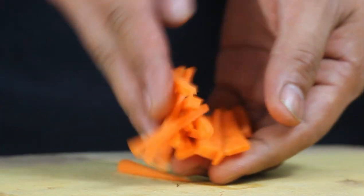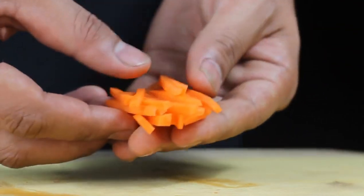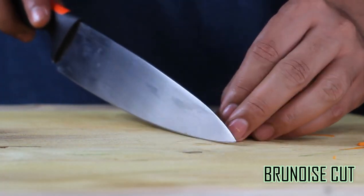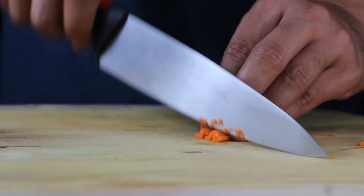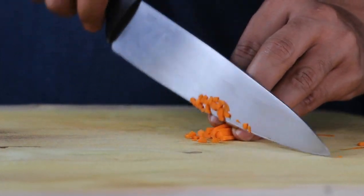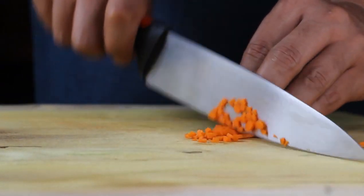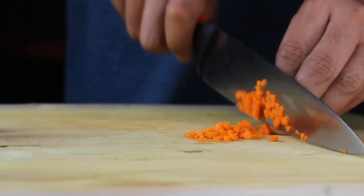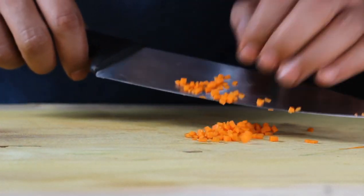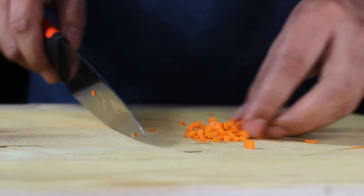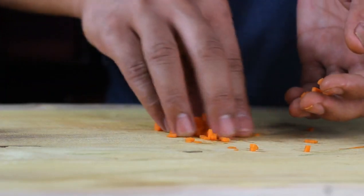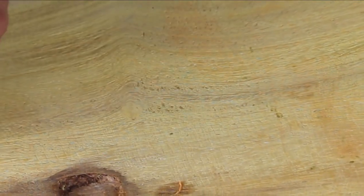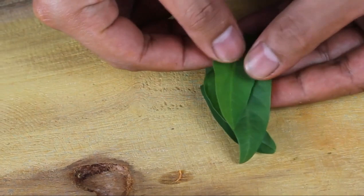Next step is brunoise. To do a brunoise cut, the vegetable must first be cut in julienne, then turn a quarter and dice again to create approximately 1/8 inch cubes. This cutting technique is ideal for carrots, onions, leeks, and celery, but can also be used with bell peppers and hard root vegetables like beets and turnips. And look at those cuts. It's gorgeous. We're done with the brunoise. Let's move on to our next cut.